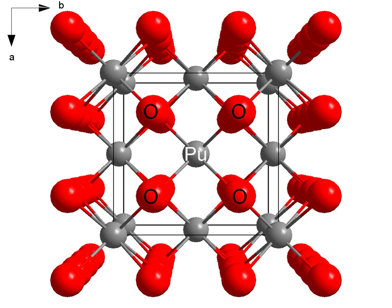PuO2 crystallizes in the fluorite motif, with the Pu4+ centers organized in a face-centered cubic array and oxide ions occupying tetrahedral holes. PuO2 owes its utility as a nuclear fuel to the fact that vacancies in the octahedral holes allow room for fission products.